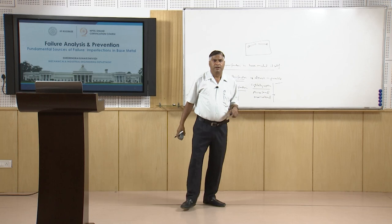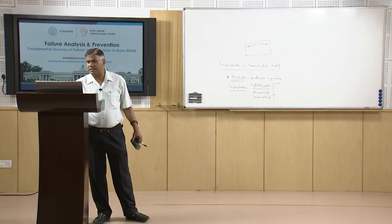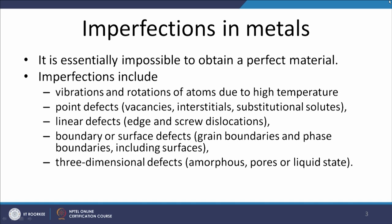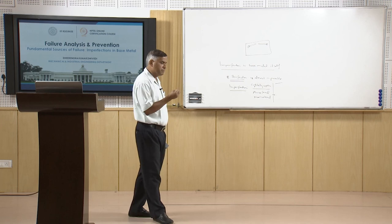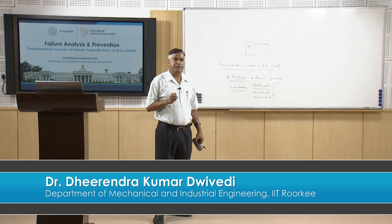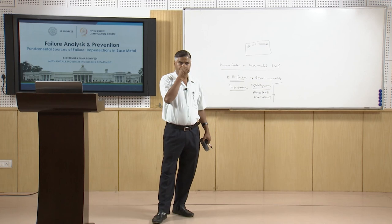Both these aspects — stress concentration and reduced load-resisting cross-sectional area — increase the tendency for failure. If one complete plane of atoms is missing it leads to dislocations, shown as edge dislocation. These imperfections may be present in various forms: when the metal system is heated, atoms start vibrating at high temperature. Imperfections include point defects like vacancies, interstitial spaces filled by foreign particles, or substitutional solutes; linear defects like edge and screw dislocations; and boundary or surface defects in the form of grain boundaries.